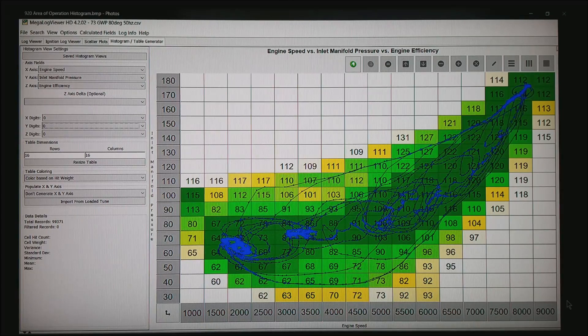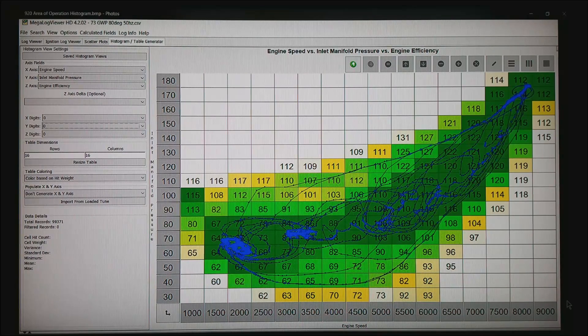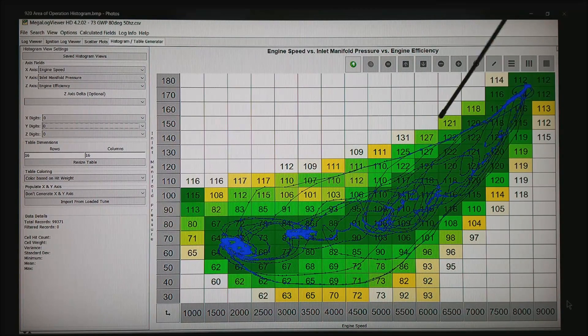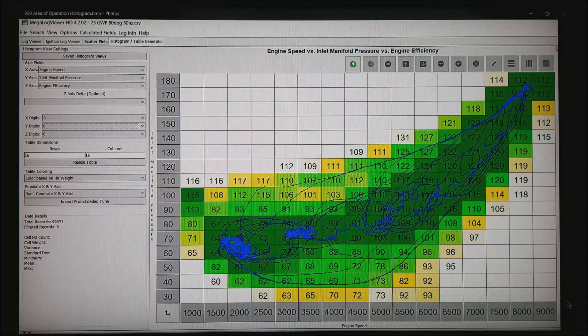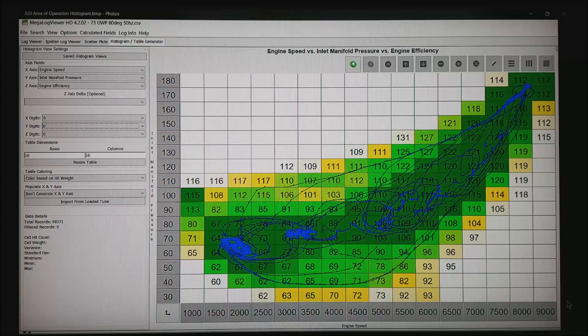The other thing to notice is I didn't actually count these boxes, but it is about half of the cells that you really use out of the table. You can't physically get here with this motor and you can't in a downshift get to 9000 RPM and 30 kPa. It just simply will never get there.